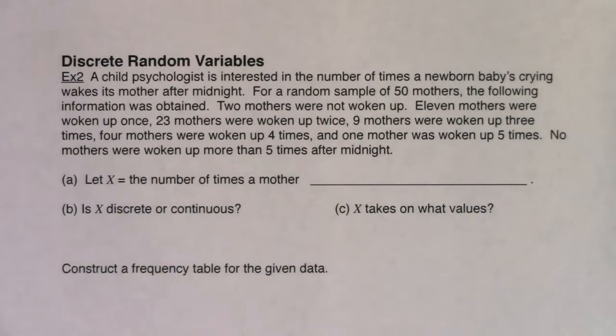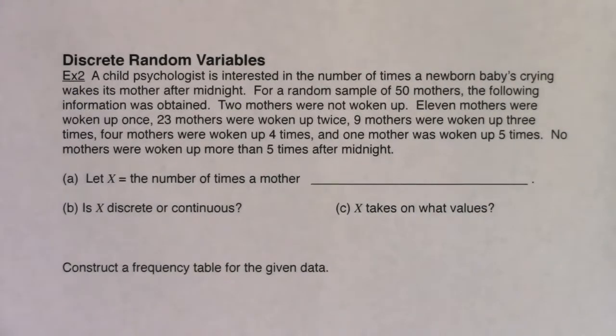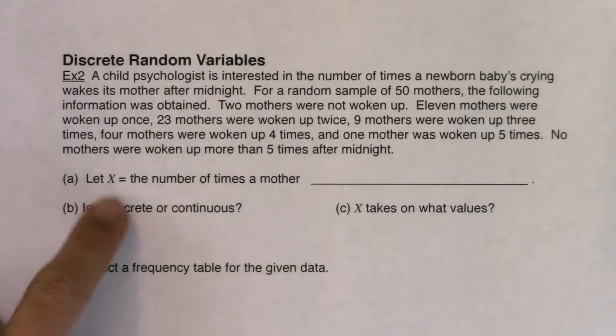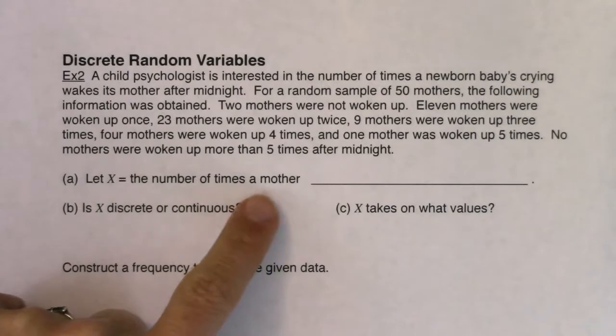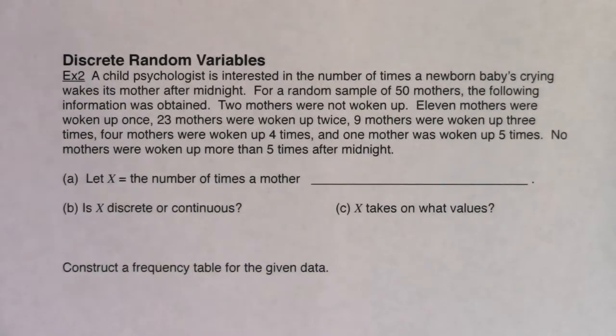With all of that, maybe you spotted the variable. I'm going to start these problems by setting you up pretty well with what the variable is. So X is the number of times a mother is woken up by her newborn after midnight.